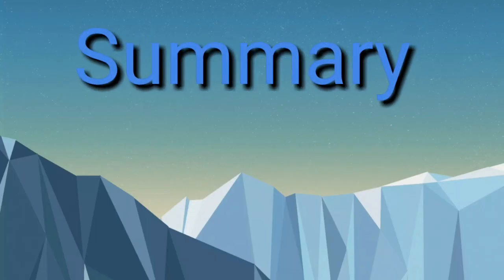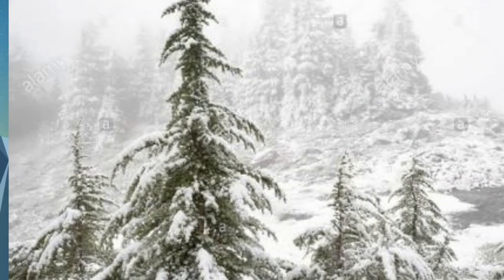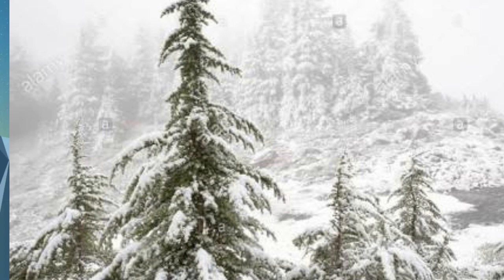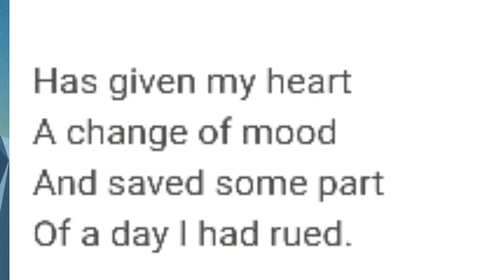Now let's look at the summary of this poem. The first stanza describes that the speaker is under a hemlock tree, probably during the winter season. There is snow on the tree. When the man reaches near the tree, a crow happens to send some snow dust down on the man — maybe the crow was merely shaking, landing, or readjusting its feet. A light dusting of snow is the result, and it lands on the speaker.